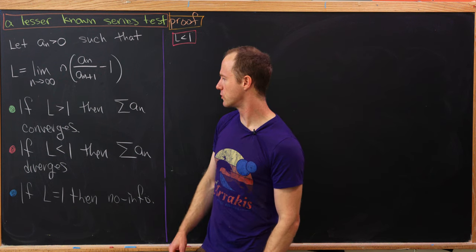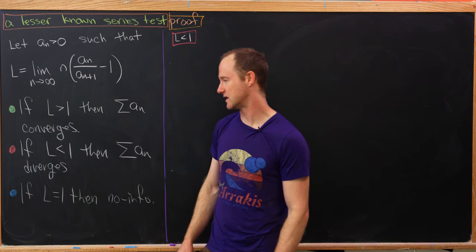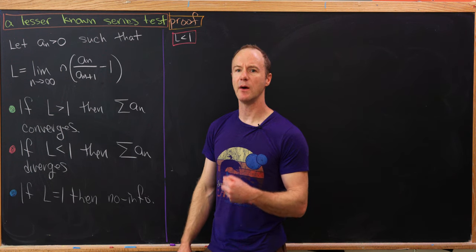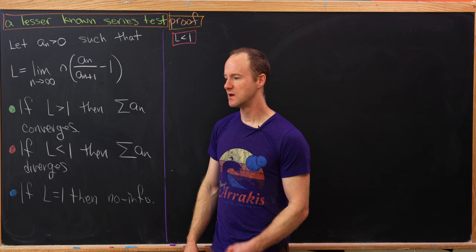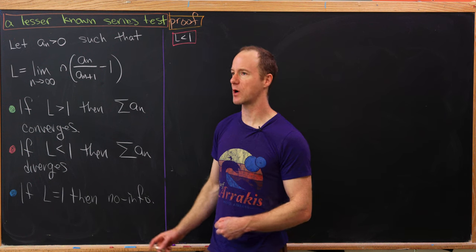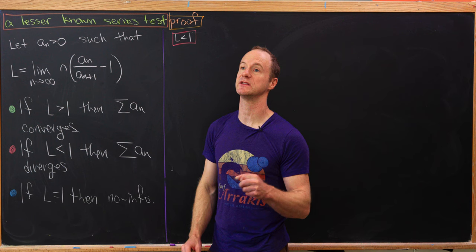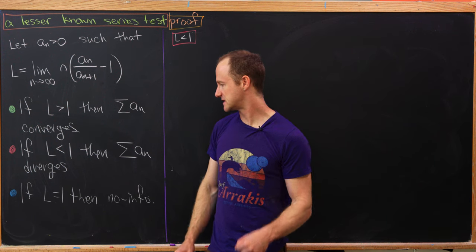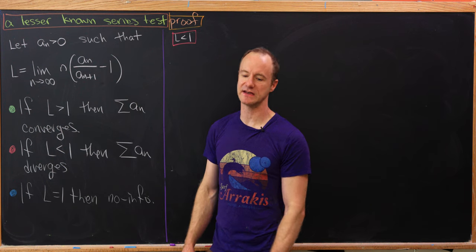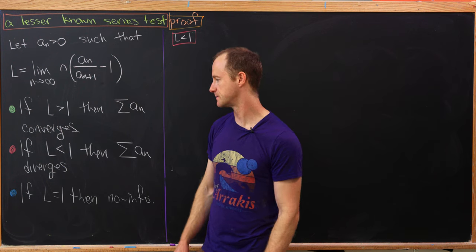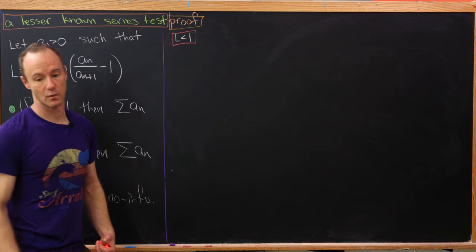The part we'll prove is the divergence part, the case where l is less than one. A quick adaptation will give you the convergence part. The inconclusive part requires finding two different series — one satisfying l equals one that converges, and another that diverges. So let's look at the case when l is less than one.